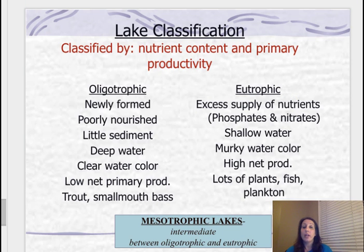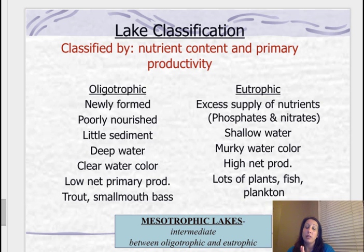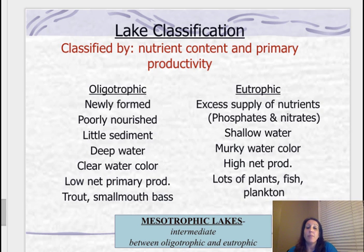When you look at lake classification, it's based on the availability of nutrients. You have oligotrophic lakes — these have low levels of nutrients and low net primary productivity (NPP), little sediment, deep water, and not a lot of productivity. You might find trout and smallmouth bass, but they're poorly nourished.